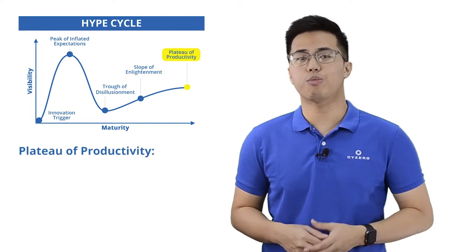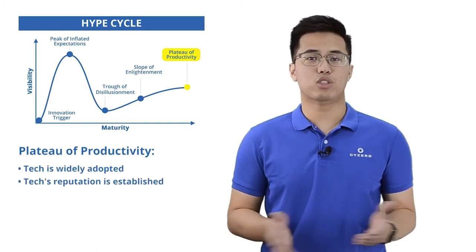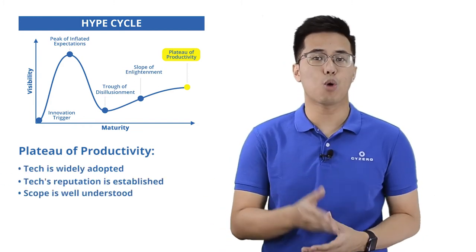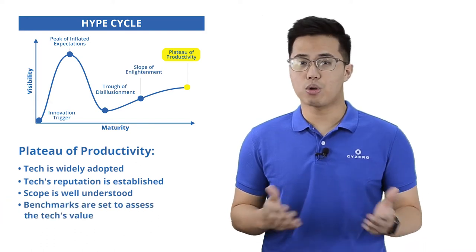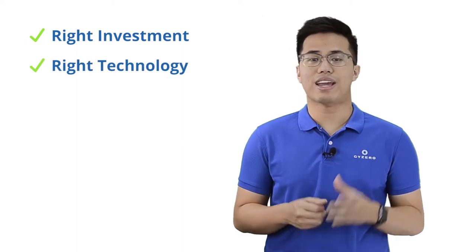Last and fifth phase is the plateau of productivity. This is the time where the technology is widely adopted. The tech's reputation is well established and scope is well understood. Benchmarks are also set to assess product's value. The hype cycle helps businesses by telling which tech is just hype or reality. It differentiates technologies that have tall claims and no proof, the ones that are viable, and the ones that are promising with time. This helps businesses make the right investment in the right technology at the right time.